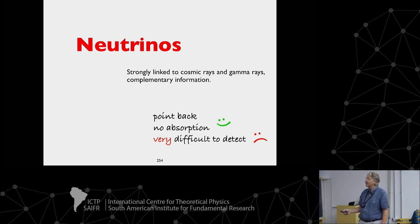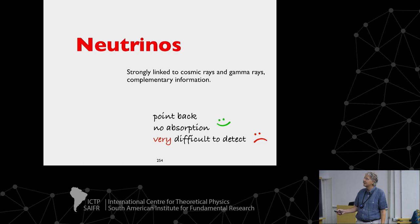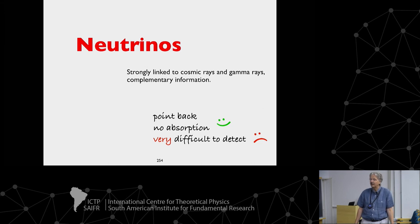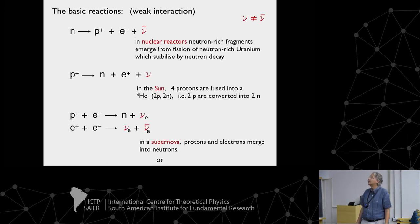Neutrinos are not easily absorbed in the matter between the source and us, so we can even look inside the sun and see what's happening there, or inside clouds and active galaxies. But of course this is also a curse because they are difficult to detect. They don't interact very well with detector materials, so you need huge detectors in order to capture a few.